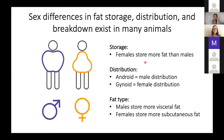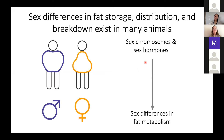In addition to sex differences in how much and where fat is stored, males and females also store different kinds of fat. Males typically store more visceral fat whereas females store more subcutaneous fat. Visceral fat sits right against your organs, is highly innervated, highly vascularized, and is associated with an increased risk of developing metabolic disease. Subcutaneous fat sits beneath the skin, is less innervated, less vascularized, and is not associated with increased metabolic disease risk.